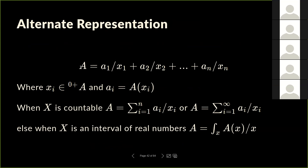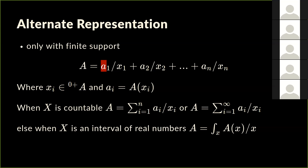An alternate representation for fuzzy sets: when you have a finite number of elements in the universe set and can't define the membership function analytically, you can write a fuzzy set A as a sum of terms, each being the membership grade slash the element — where slash is not division but a notation. This representation requires finite support and can't be used with infinite support.